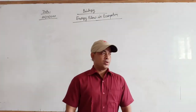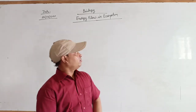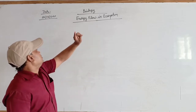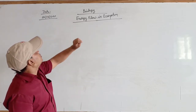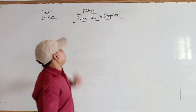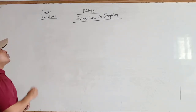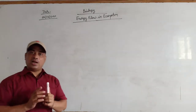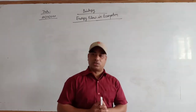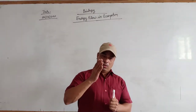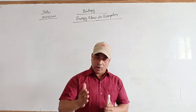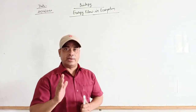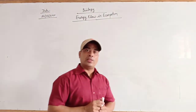Good morning. Today I will explain the important function of ecosystem. The most important function of ecosystem is energy flow. The Sun is the ultimate source of energy in all ecosystems because the Sun provides energy at all trophic levels, directly or indirectly.